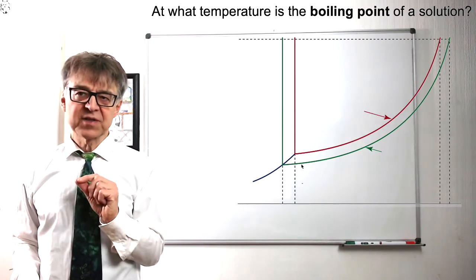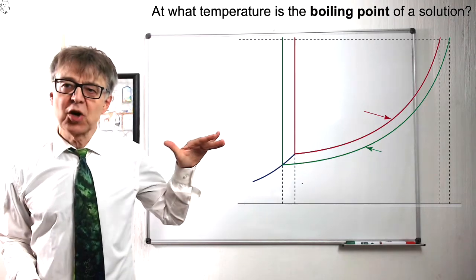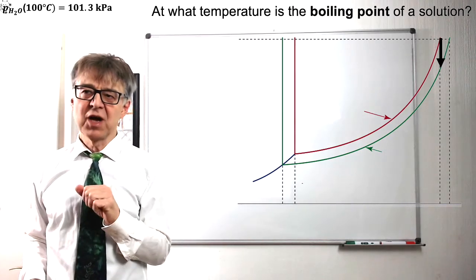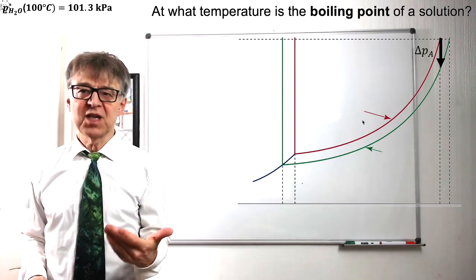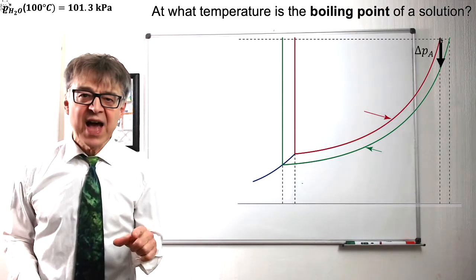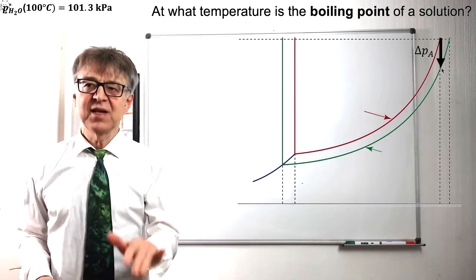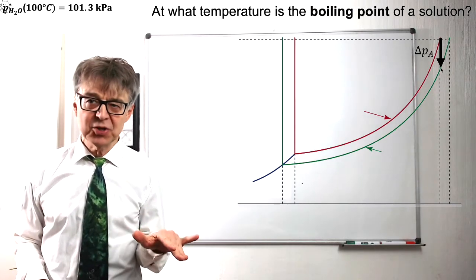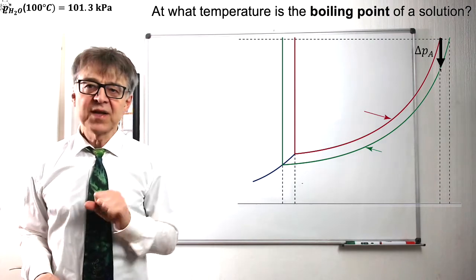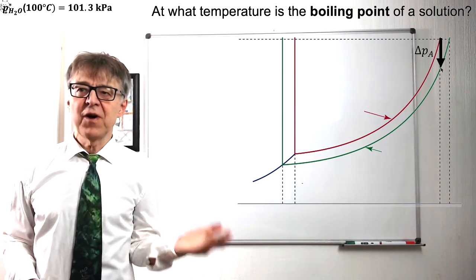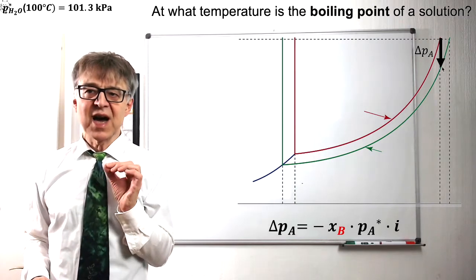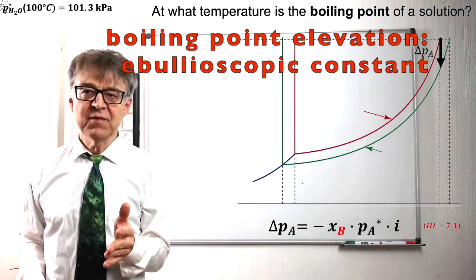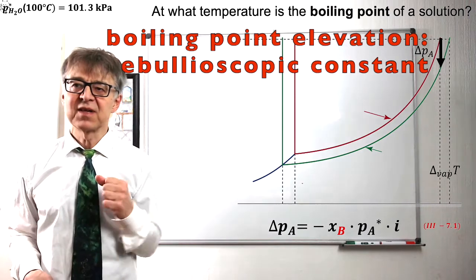According to Raoult's first law, the vapor pressure of a solution is always lower than the vapor pressure of the solvent. A liquid boils when its vapor pressure is equal to the external pressure. However, a solution has a lower vapor pressure at the same temperature, expressed by Raoult's first law. Thus, in order to boil a solution, we have to further raise the temperature. The solution exhibits a higher boiling point than the pure solvent, expressed by this equation.